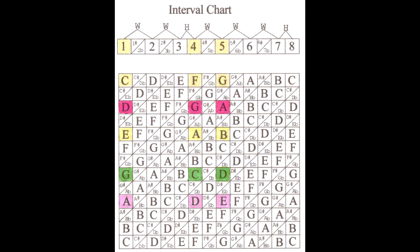In the key of D, the 1, 4, 5 chords are the D, G, and A chords. In the key of E, the 1, 4, 5 chords are the E, A, and B chords.